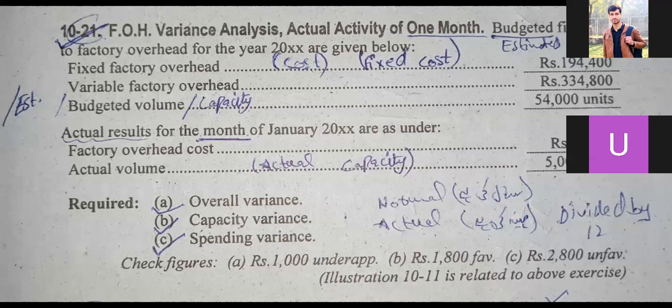Budgeted figures as to factory overhead for the year are given below. Fixed factory overhead is Rs. 1,94,000. The variable FOH is Rs. 3,34,800. Budgeted volume or estimated capacity is 54,000 units. Actual results for the month of January are as under. Factory overhead cost is Rs. 50,000 and actual capacity is 5,000 units.